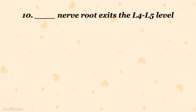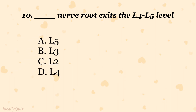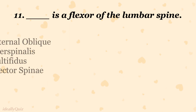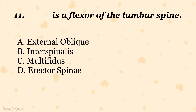Which nerve root exits the L4-L5 level? A) L5, B) L3, C) L2, D) L4. The correct answer is D) L4. Which muscle is a flexor of the lumbar spine? A) external oblique, B) interspinalis, C) multifidus, D) erector spinae. The correct answer is A) external oblique.